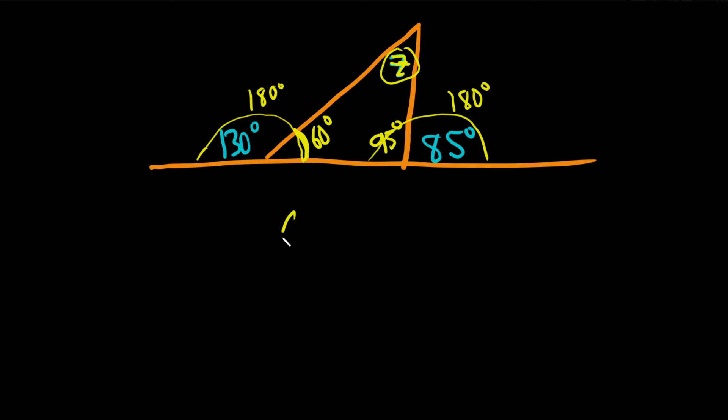So we have 60 plus 95 plus Z equals 180 degrees. 60 plus 95 is 155 plus Z equals 180 degrees.